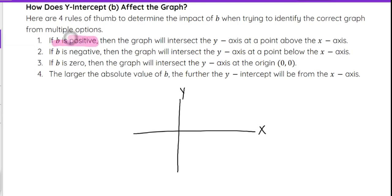So if b is positive, that means that the graph will intersect the y-axis above the x-axis. So that means that wherever the line is, it's going to cross the y-axis above this x-axis. So if this is my x-axis, it's going to cross somewhere above, somewhere up here. And that's if the y-intercept is positive.